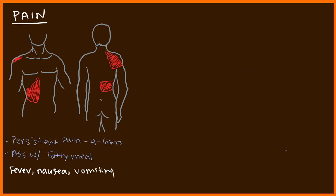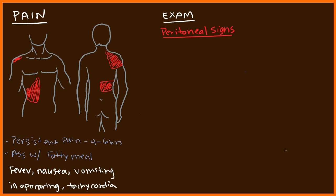In addition to pain, patients also get fever, nausea, vomiting, appear ill, and have tachycardia. These are important symptoms to differentiate cholecystitis from uncomplicated gallstones, since management differs. On examination, patients often have peritoneal signs — any movement causes pain, consistent with peritoneal irritation. They frequently have voluntary and even involuntary guarding.